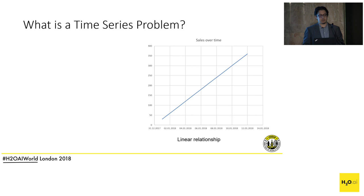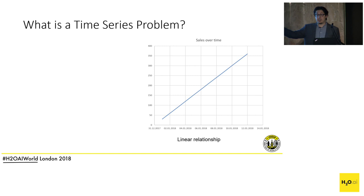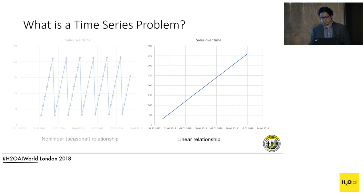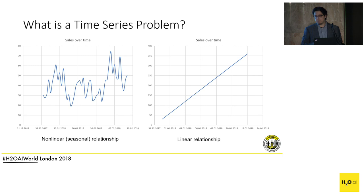So what is a time series problem? It's essentially when the target variable demonstrates a significant relationship with time. That relationship might be very straightforward — something very linear where the more time goes by the more sales increase or decrease — or it could be something very seasonal or nonlinear, something that goes up and down through time. But more realistically it quite often looks like the graph shown here.